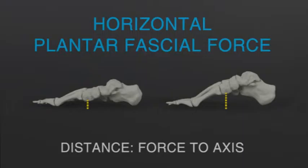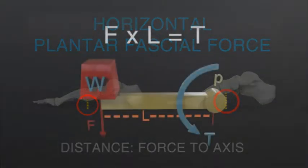Note that the plantar fascial force is changed in direction by its attachment to the sesamoids. The force applied to the proximal phalanx becomes primarily horizontal. If we look at the axis of first ray elevation in relation to this force, we can calculate a moment or torque, which is magnitude of force times perpendicular distance.